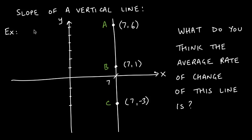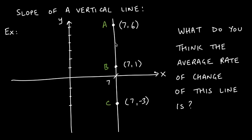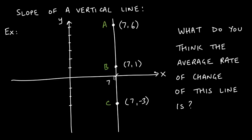In this next example, investigate the slope of a vertical line. The x-coordinate is 7 for all three points: A is (7, 6), B is (7, 1), and C is (7, −3). Which coordinate does not change? Find the slope of the vertical line using points A and B, then B and C, then A and C.